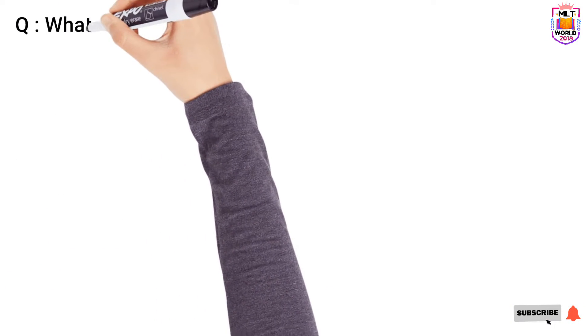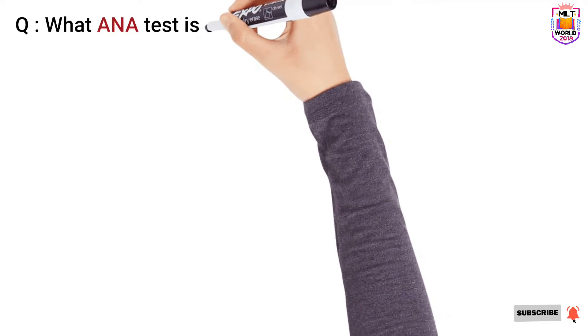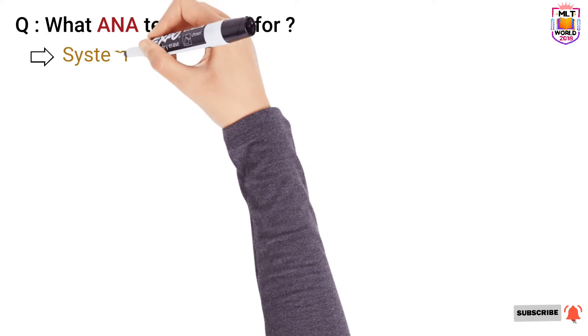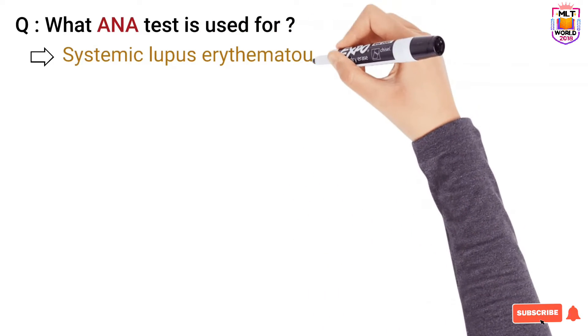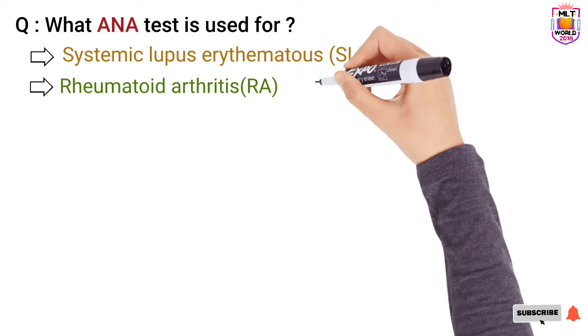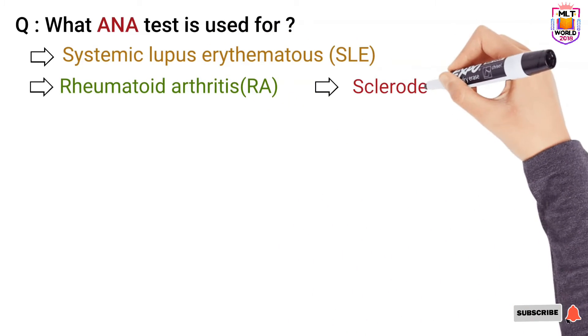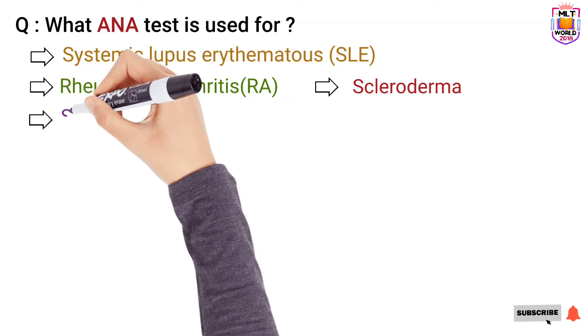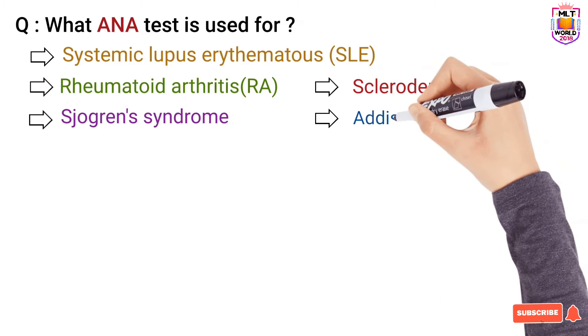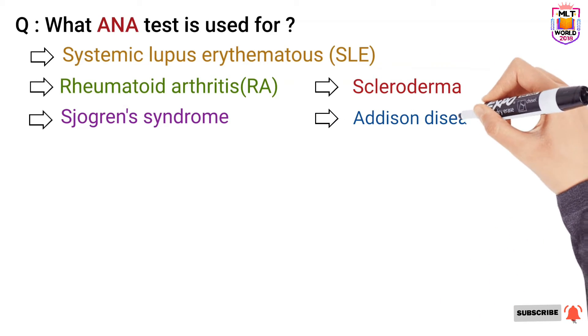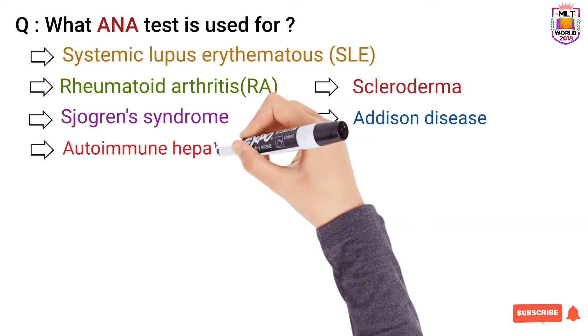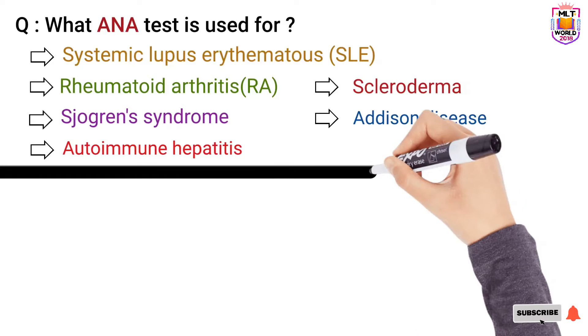So in what diseases is ANA test used or for what we will use this test? These are systemic lupus erythematosus that we will call SLE and rheumatoid arthritis that we will call RA, Scleroderma disease and Sjogren's syndrome and Addison disease and autoimmune hepatitis. So these all are the autoimmune disorders in which doctors will write ANA test.